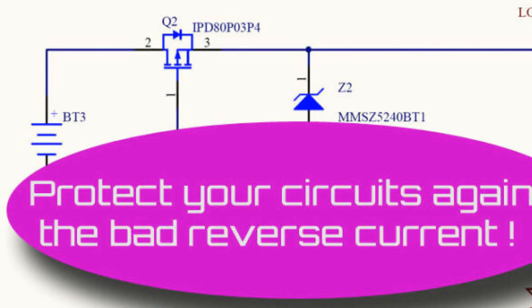Additional ways to determine polarity: determining the polarity of the battery is also possible by the appearance of individual elements. In a straight polarized battery, the plus terminal is larger than the minus terminal and the terminal leads are generally thicker. Terminal thickness in mm — straight polar plus: 19.5, minus: 17.9; reverse polar plus: 12.7, minus: 11.1.